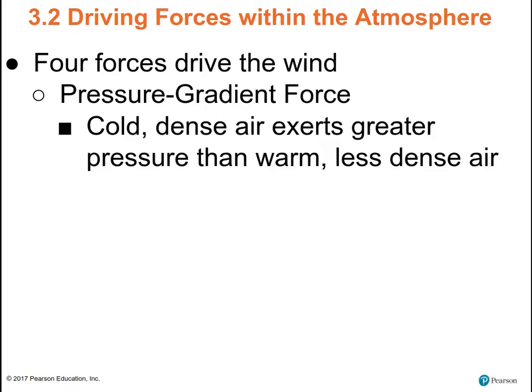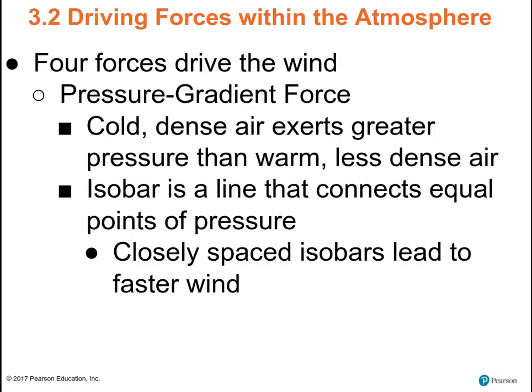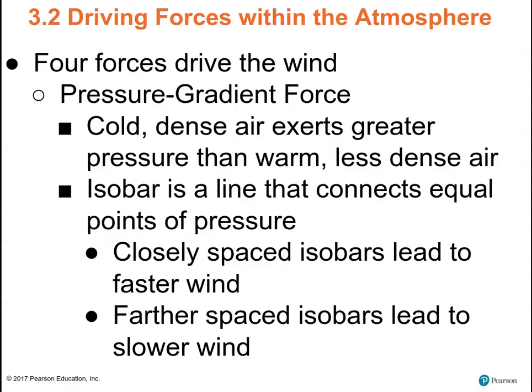An isobar is a line that connects equal points of air pressure. When the isobars are closely spaced, that means there's a really rapid change in air pressure over a short distance — a lot of change with a little distance — so you'd expect to find really high wind speeds there. Where the isobars are farther apart, you'd expect to find lower wind speeds.